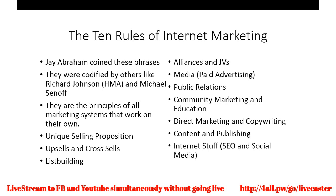Then comes all the internet stuff: SEO, social media, and all the things we do to get traffic. As you can see, getting on social media is just a small part of what we can be doing to market our product. All these things can work together in a system to make your product sell faster and to the right people. These are the 10 things you want to build a system around and use as a checklist to maximize the marketing you're doing on your product or service.